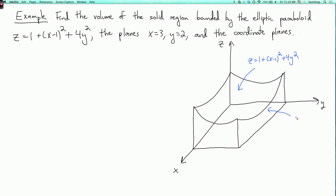On the right, we have the plane y equals 2. In the front, we have the plane x equals 3. On the left, we have the plane y equals 0. In back, we have the plane x equals 0. And on the bottom, we have the xy-plane, which is where z equals 0. So that's our region.